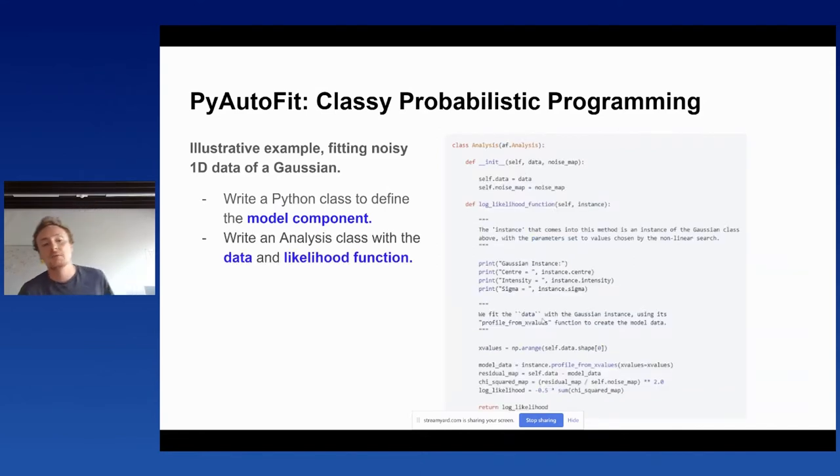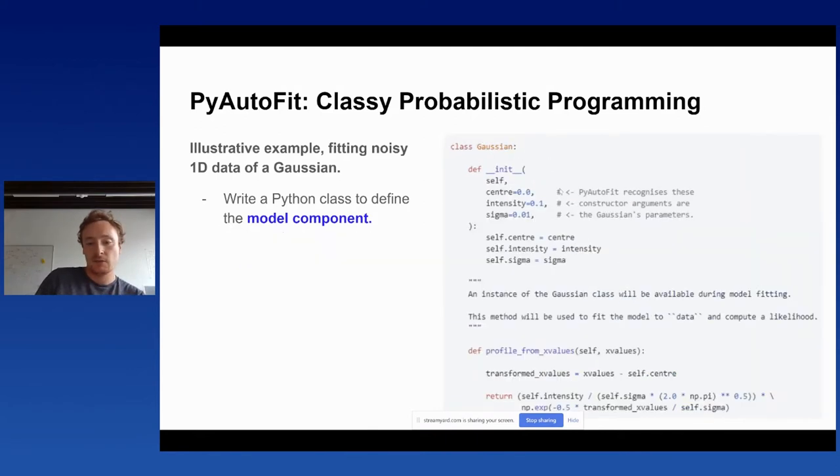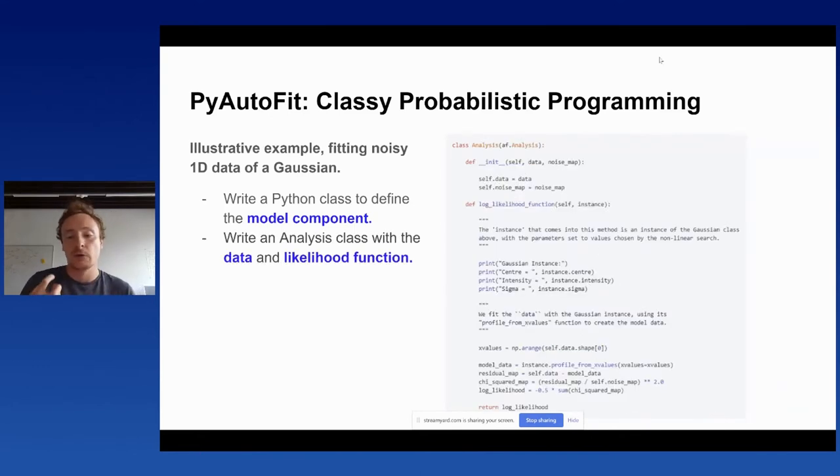How would we get PyAutofit to find the parameters that correspond to this red curve? And in order to set up a model fit with PyAutofit, you basically have to undertake three steps. It requires you to basically write three Python classes. And so the reason we call this classy probabilistic programming is it's heavily built into the Python class data structures. So first of all, we need to write our model as a class. This is an example of what we'd write, so we'd call the class Gaussian because this is the model component we're going to fit. And the crucial thing to understand is that the parameters of the Gaussian that we're going to fit, the center, the intensity of the sigma we showed previously, these are going to be written as the input parameters of our constructor, of our init function. So PyAutofit, when we do the fitting, will read this init constructor, it will recognize these parameters, and it will compose a model and a non-linear parameter space of these dimensions.